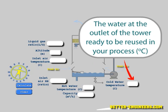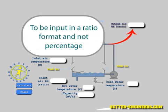Cold water temperature, in centigrade, refers to the water at the outlet of the tower, ready to be reused in your process. The last parameter is the relative humidity ratio for the hot air, also in centigrade, and needs to be input in a ratio format and not percentage.